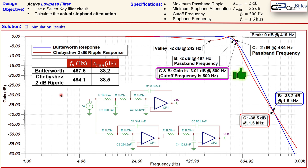This example compared the Butterworth and Chebyshev filter response types, designed the circuits, and analyzed the number of components required. If you have any questions or comments, please let me know in the comment section. Don't forget to like and share these videos so we can reach more people — thanks for your cooperation and see you next time.